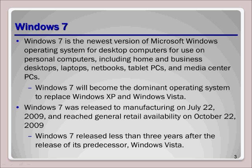Anytime you talk about computers and networks, you should discuss security. When Windows Vista was introduced, many of the changes to Windows Vista and Windows 7 were designated to make Windows more secure. Sometimes, to make a system more secure, you might have to give up a little, such as UAC or user account access prompts and incompatibility with older software.